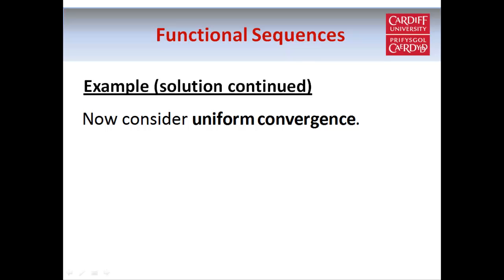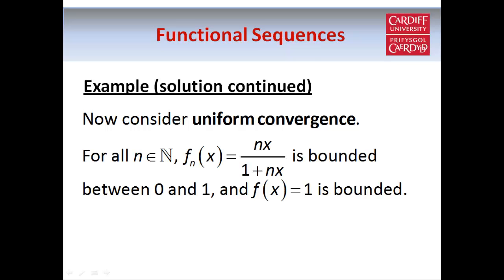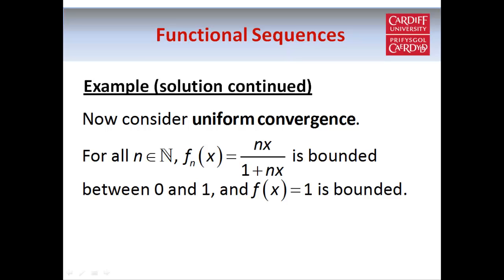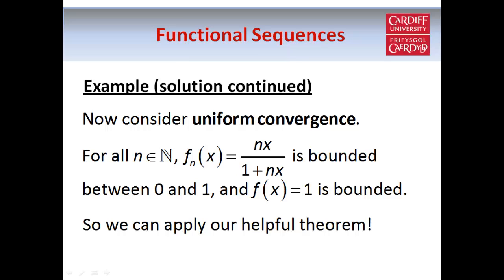Now let's check for uniform convergence. Each function fn(x) is bounded between 0 and 1, as the diagram suggested, so we can apply Helpful Theorem 1. To apply the theorem we need to find the Chebyshev norm of fn minus f and show it tends to 0. We have f(x) = 1, since we're checking whether the sequence converges uniformly to the constant function 1.